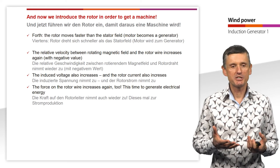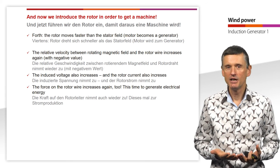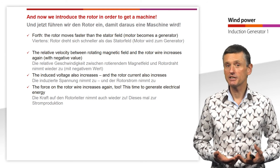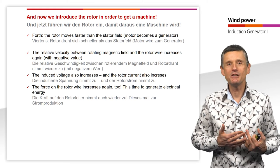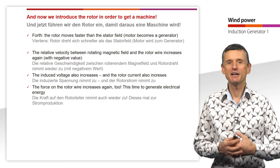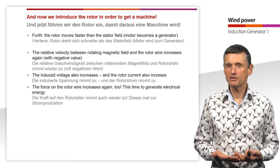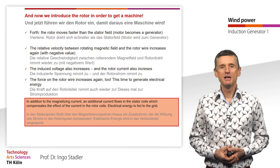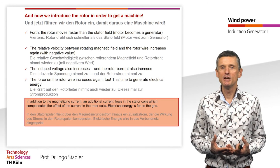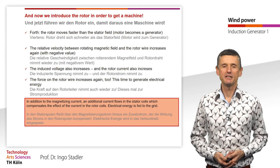Going one step further: if the rotor blades rotate the rotor faster than the magnetic field, a relative velocity between the magnetic field and rotor reappears, inducing a voltage and increasing current. A force acts on the rotor wires again, but this time to generate electrical energy. An additional current flows in the stator coils compensating the rotor coil effect, and electrical energy is fed to the grid.